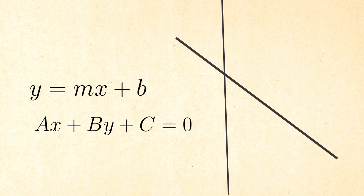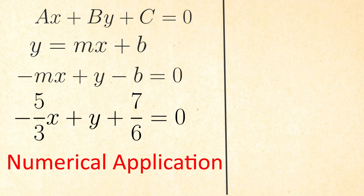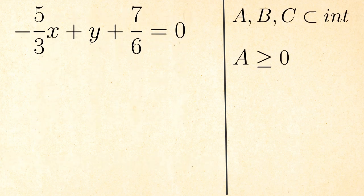You can translate any line in the slope intercept form to the general form by following this simple method. Move all the terms to the left hand side and then make sure to verify these conditions. The first one signifies that all the parameters have to be integers. And that means that the values that have a decimal point are not allowed.